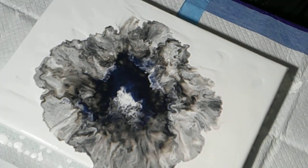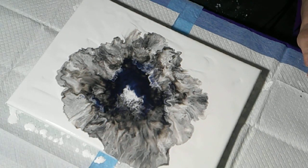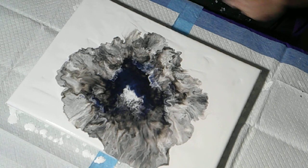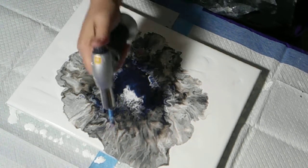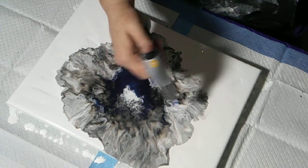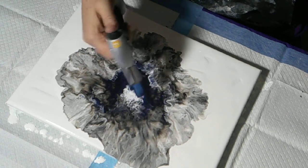So this is just a quick little Dutch pour on a 12 by 16 canvas. Let me torch it and see if I can get any more cells and I'll bring it back in for a close-up, cells or lacing or something.